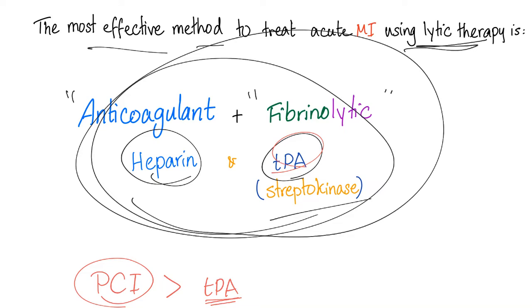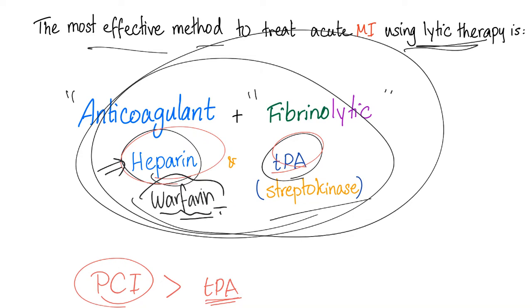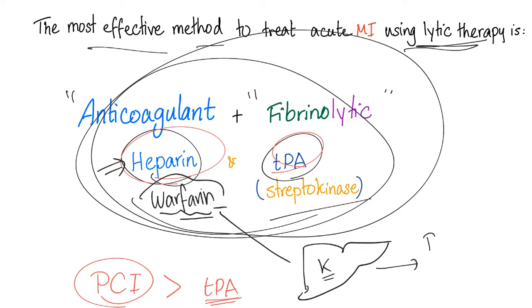If using TPA, give it with heparin — not warfarin. Warfarin is very slow because it must go to the liver and inhibit gamma-carboxylation, which requires vitamin K, to stop production of the vitamin K-dependent coagulation factors: prothrombin, factor 7, factor 9, factor 10, protein C, and protein S. In acute myocardial infarction, you need fast-acting anticoagulation, so heparin is the right choice.